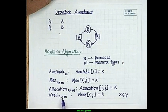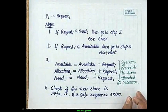For the Banker algorithm steps: we have a Request. Need equals Max minus Allocation. If Request ≤ Need, go to step 2; else throw an error. If Request ≤ Available, go to step 3; else wait. In step 3: set Available = Available − Request, Allocation = Allocation + Request, and Need = Need − Request. Then check if the new state is safe.